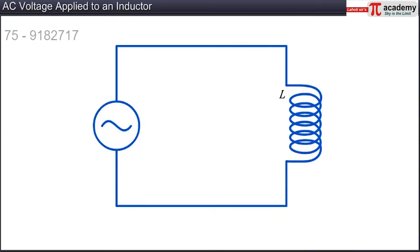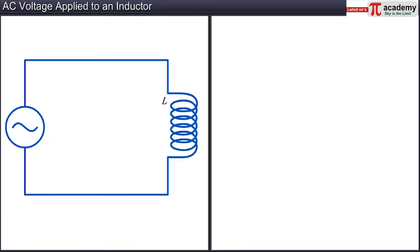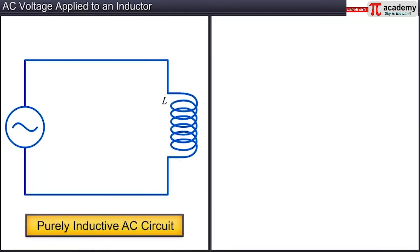Now we shall see how an inductor behaves when an AC voltage is applied across it. Let's assume that the inductor coil has negligible or zero resistance. This assumption is mainly so that we can observe how an inductor ideally behaves. Now, assuming the circuit to be purely inductive, we shall make use of Kirchhoff's Loop Rule.